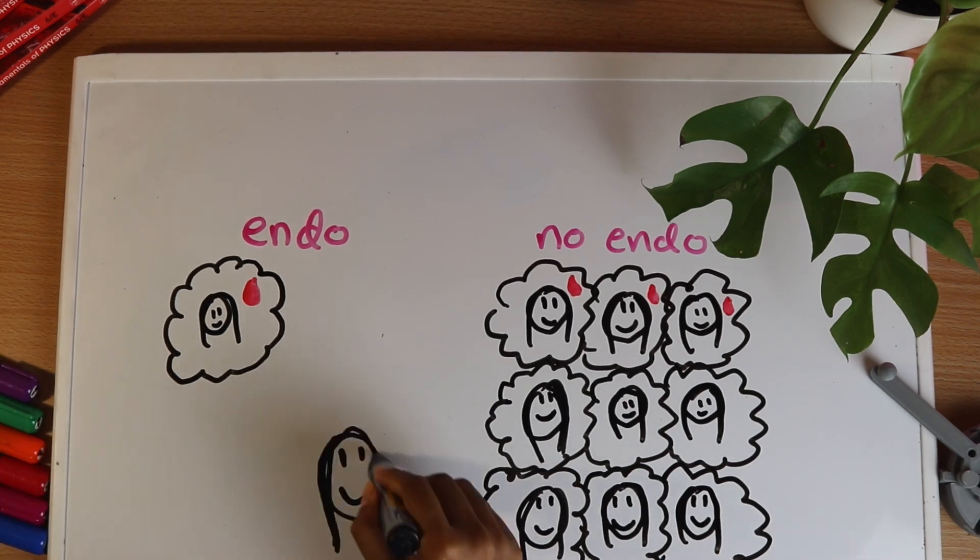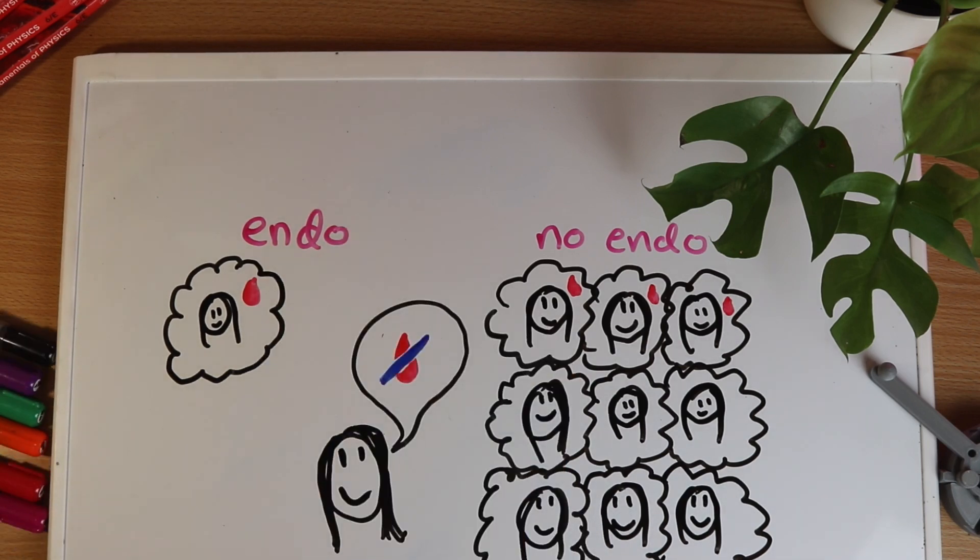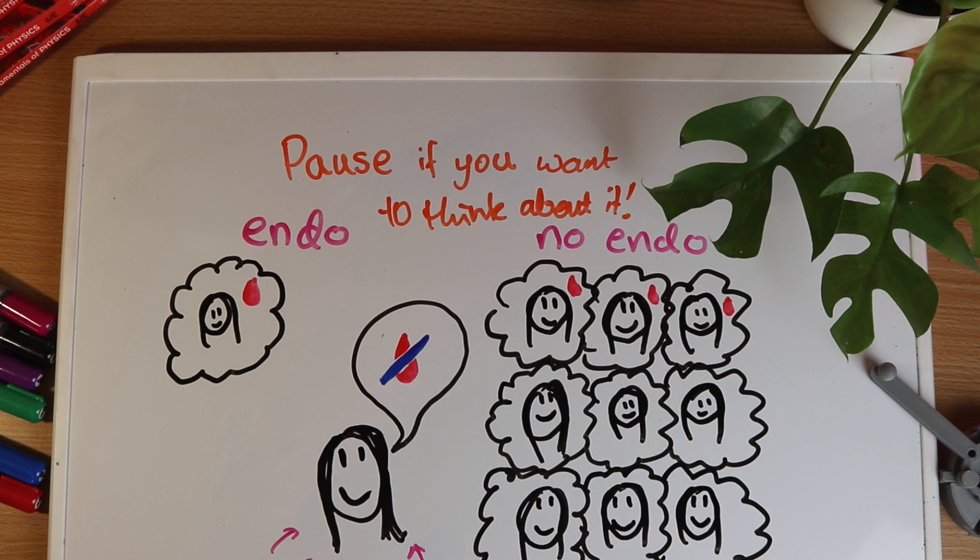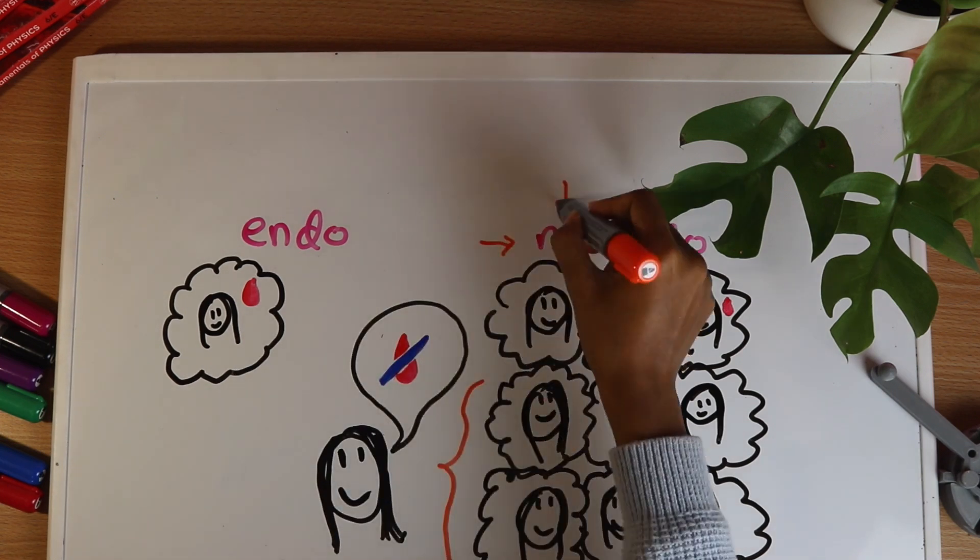If this were all true and one of these ten people said that they don't have painful periods then what can you deduce? If a person doesn't have this symptom then according to this picture they must be one of these six and so you can be sure that they don't have endo.